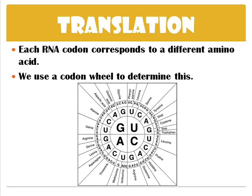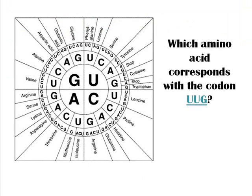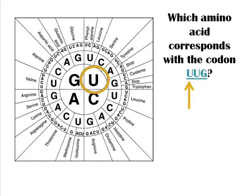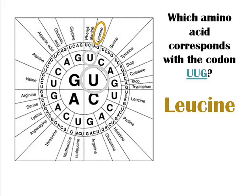A codon is a set of three bases. Let's practice using the codon wheel. To find which amino acid corresponds to the codon UUG, look at the first letter — U — and find it right in the middle of the wheel, circled in yellow. The second letter is found in the next ring. The last letter, G, is found in the outermost ring. Then look at the amino acid next to that letter — in this case, it's leucine.